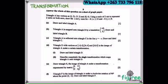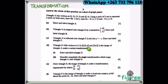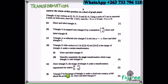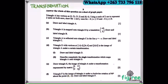Draw and label triangle A. Part B is a translation by vector (-9, 2). Part C is a reflection in the line y = -x. Part D gives you coordinates (-2, 4), (4, 4), and (4, 10, 8) — you are required to draw and describe the transformation. Part E gives a transformation matrix: [½, 0; 0, 1½]. Part F is a clockwise rotation of 90 degrees about the point (2, -2), and you are required to draw triangle F. I will take you step by step — make sure you screenshot this and follow along.